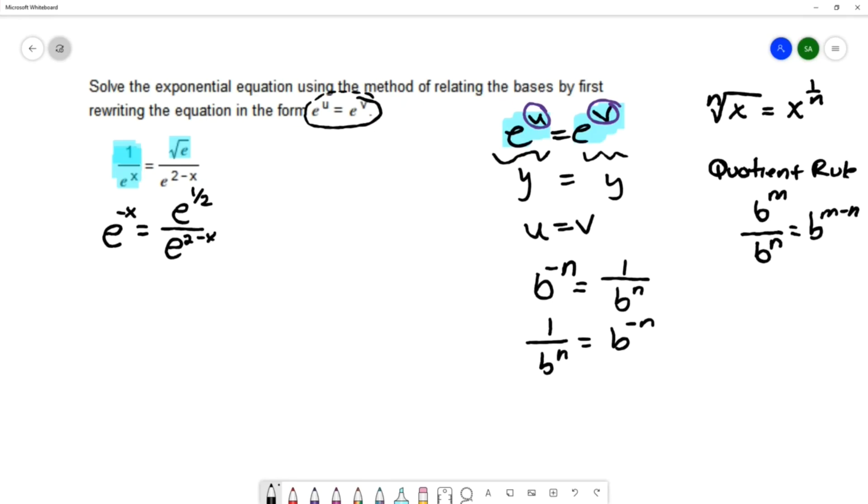So we are going to have b^(m-n). That's exactly what we have over here. We have division and we're dividing exponents with the same base. So we're going to simplify by subtracting those exponents. That will give e^(1/2 - (2-x)). I put parentheses around the exponent in the denominator because I want to subtract that whole exponent.